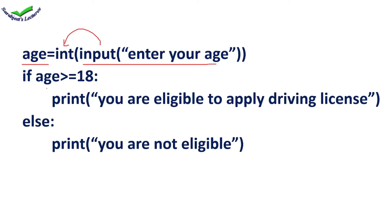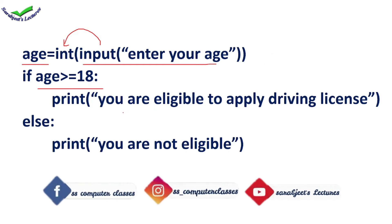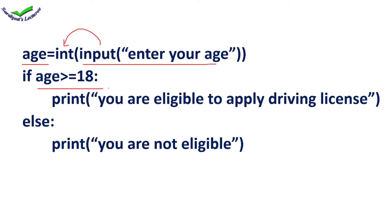After taking the value, we check whether it is greater than or equal to 18, because all persons who want to apply for a driving license should be an adult — their age should be 18 or more. So I applied the condition: age is greater than or equal to 18. If true, we display 'you are eligible to apply for the driving license'; otherwise, we display 'you are not eligible for a driving license.' The logic should be clear now.